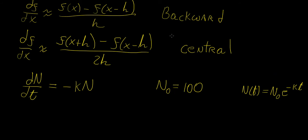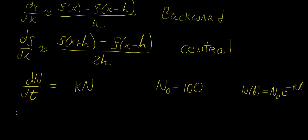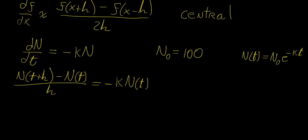Let's apply a forward difference. We replace the derivative with: n at t plus h, minus n at t, over h, which equals k times n at t. Given some initial value, we find the next value in the sequence. Rearranging, n at t plus h is a function of the previous value: n of t plus h equals n of t minus k times h times n of t.